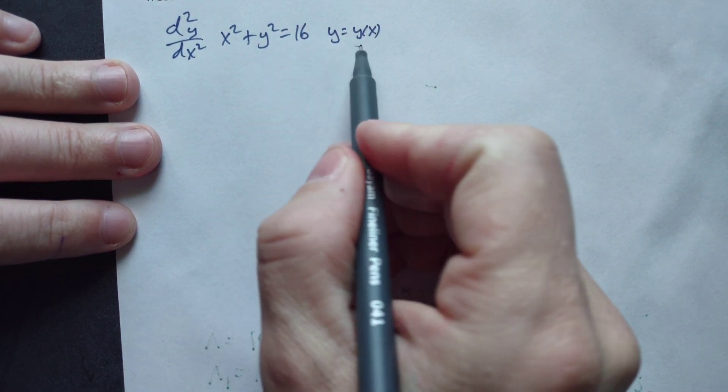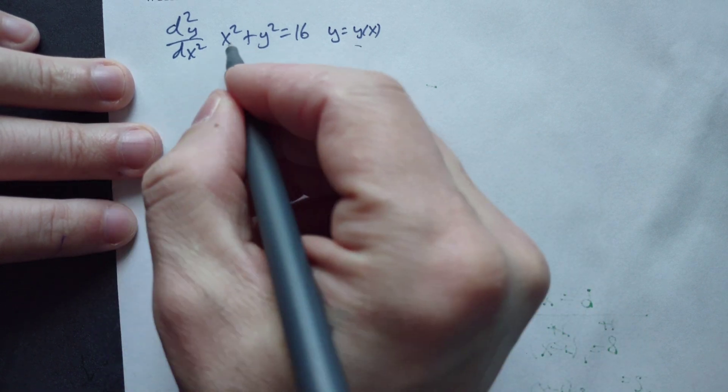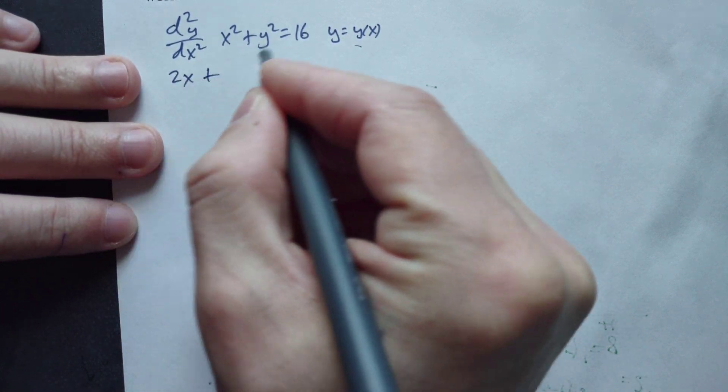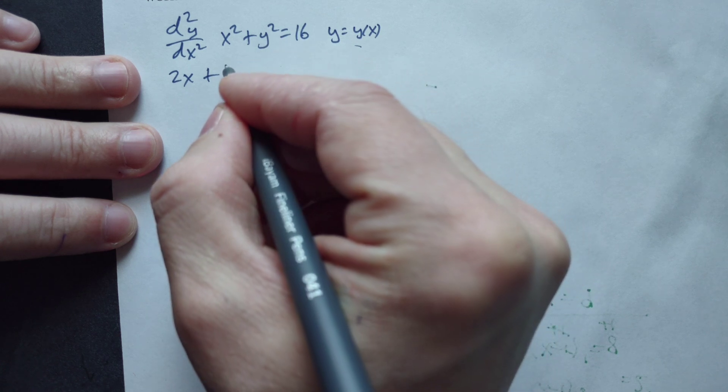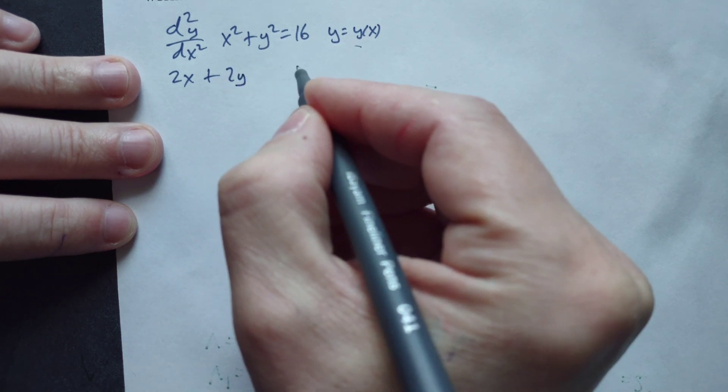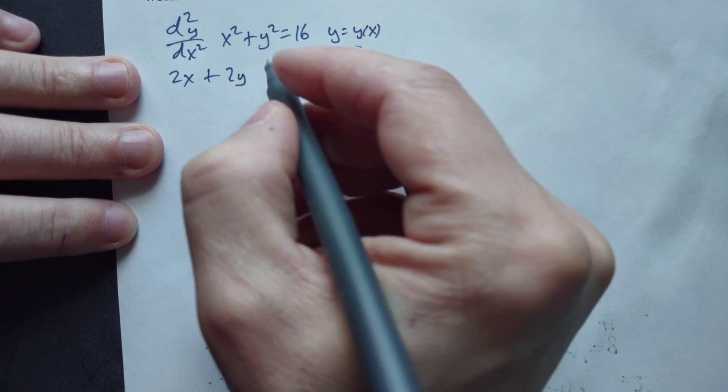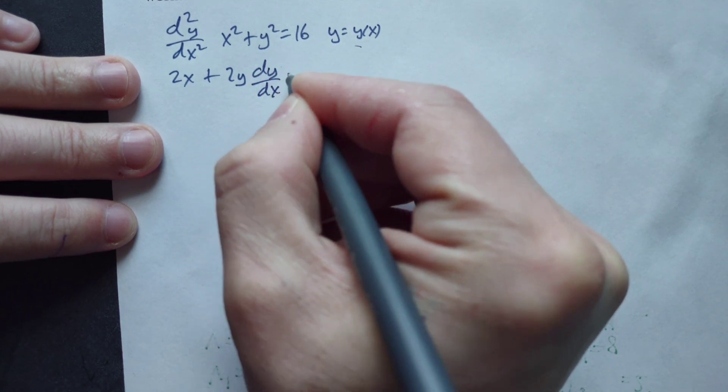You need to use the chain rule when you differentiate here. Differentiating x squared is just 2x. Differentiating y squared in this context means you bring the 2 down, multiply by the y, and then multiply by the derivative of y, which is symbolically written as dy dx.